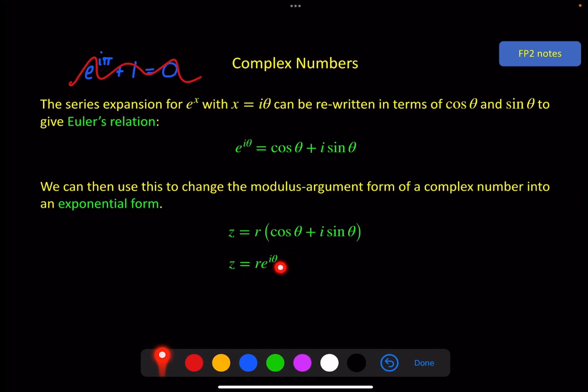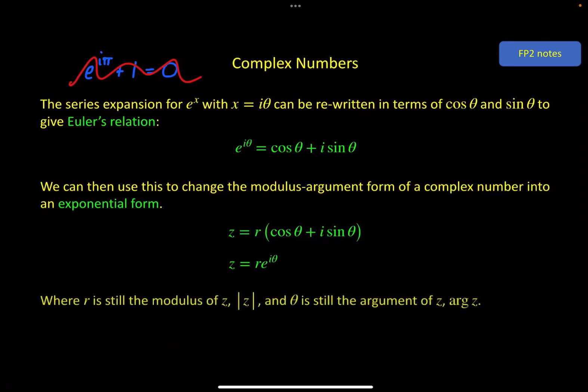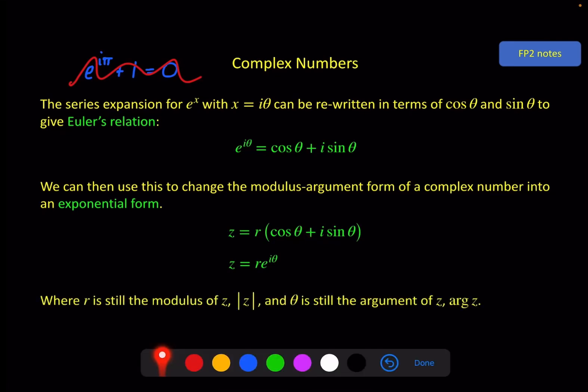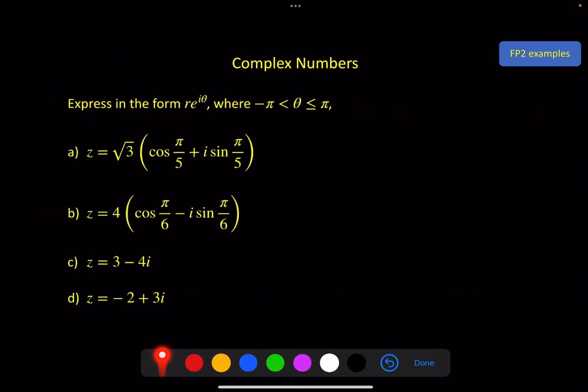Same modulus here, and theta is still the argument, same as the argument here. So we've got the same information for both of these formats, but this is the modulus argument form and this is the exponential form. It's quite easy to change between these two forms because it's the same information, but you also need to be able to change both of these into x plus yi form or vice versa. So let's have a look at a few examples of that.